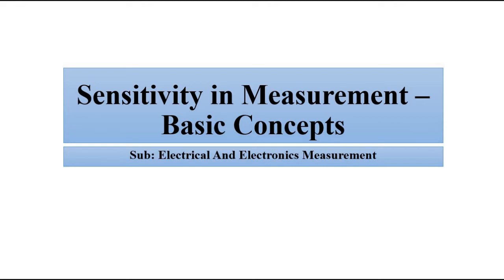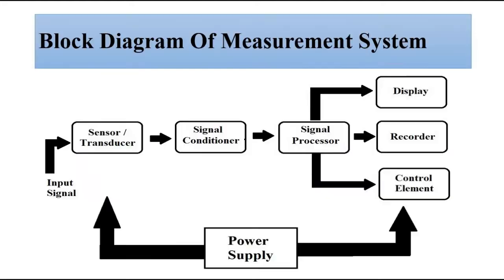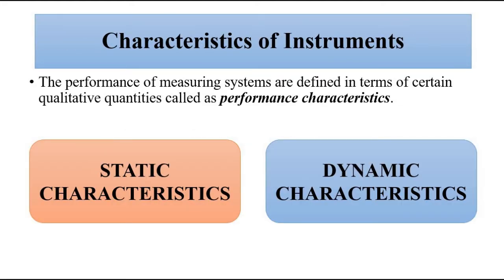Hello friends, welcome to Engineering Tutorial. We'll continue our discussion related to electrical and electronics measurement, discussing the performance characteristics of a measurement system. So far we have discussed various static characteristics. The characteristics of a measurement system can be divided into two categories: static and dynamic. Static characteristics remain constant with respect to time, while dynamic characteristics change rapidly with respect to time. We have discussed accuracy, error, repeatability, reproducibility, and precision.